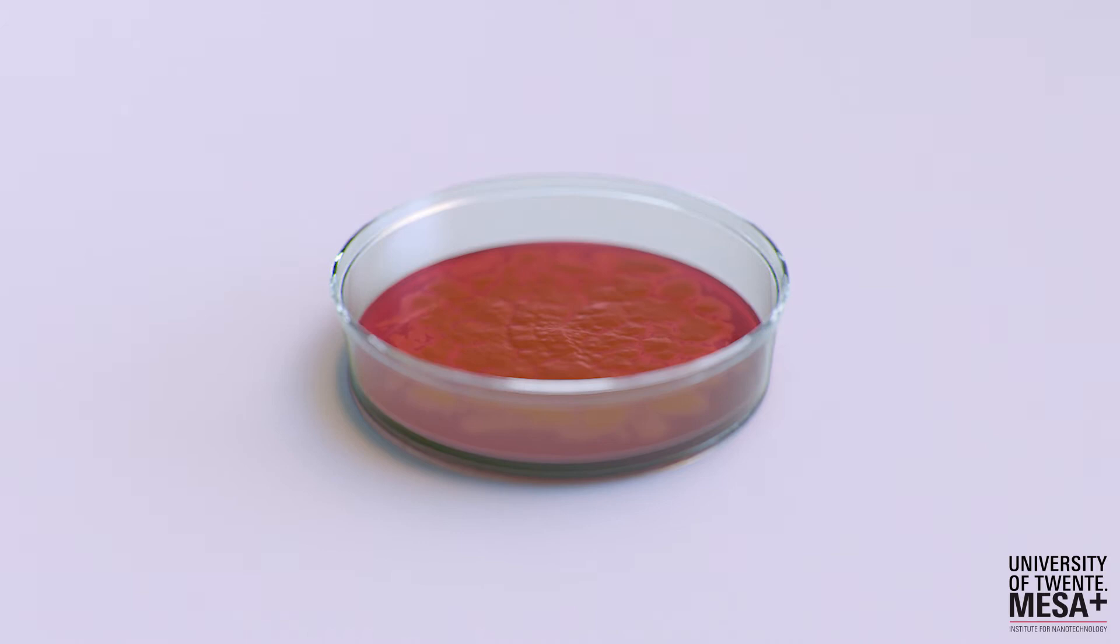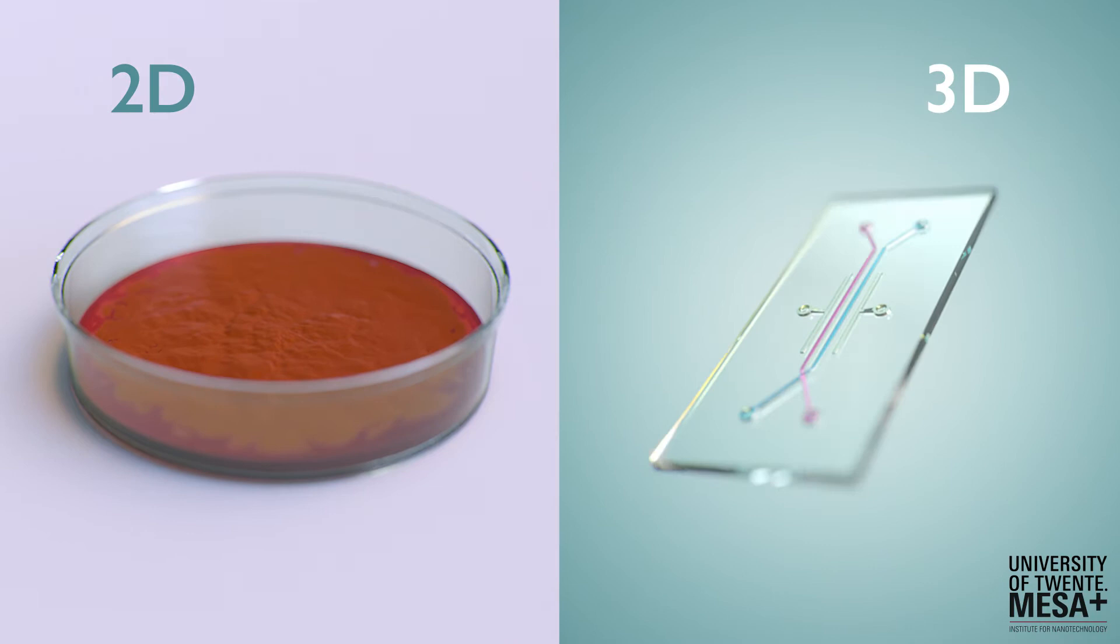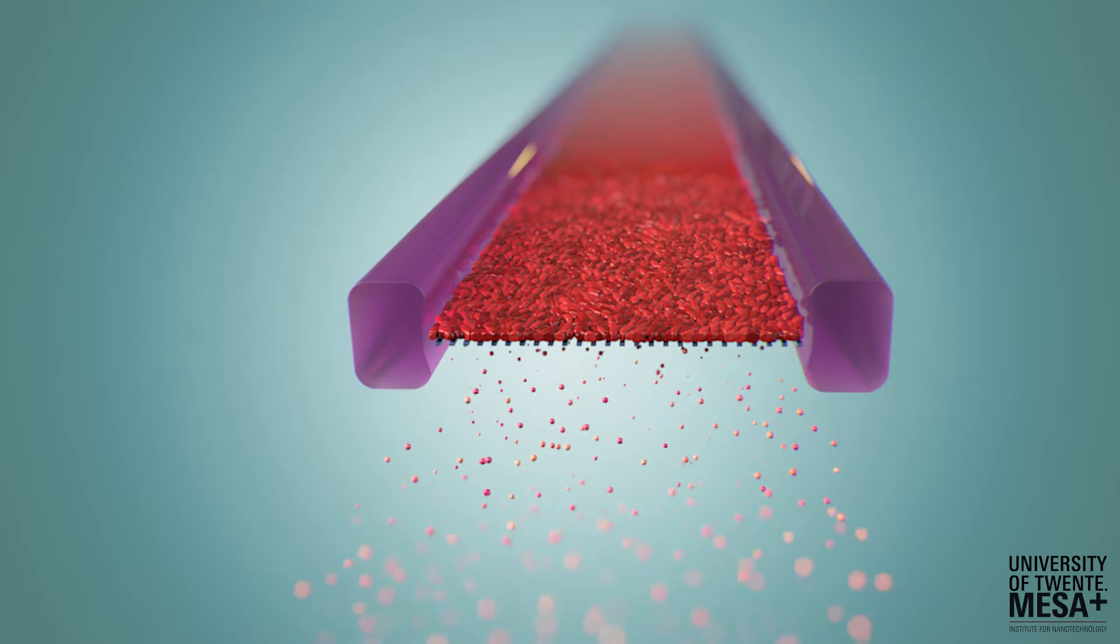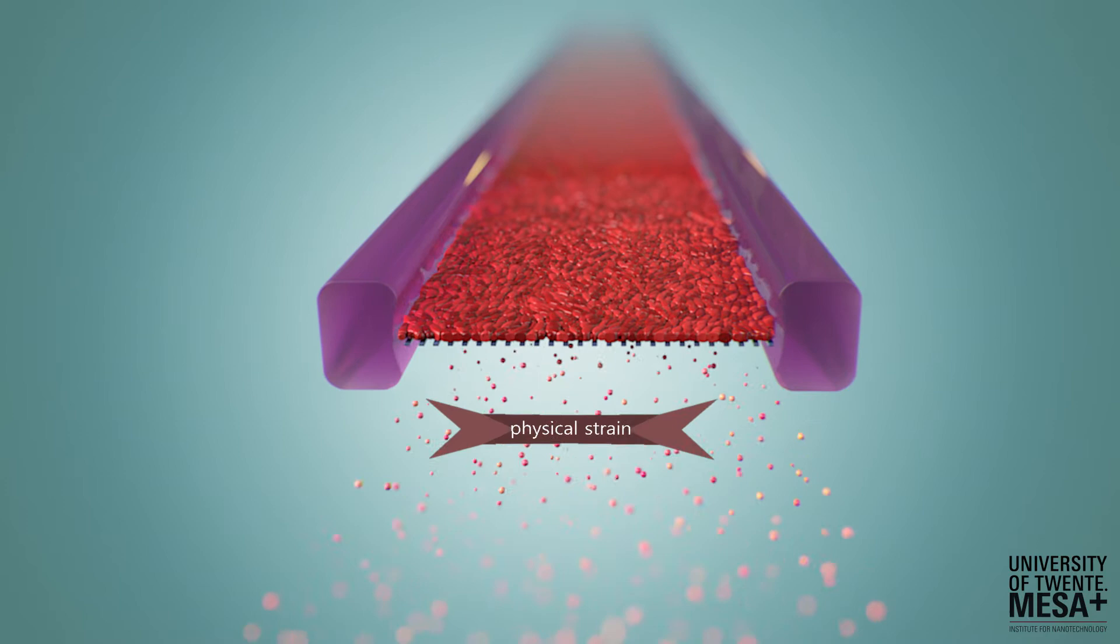Organ-on-chip devices mimic the native environment of the cells, including 3D topology or physical stretch and strain. For example, the heart muscle cells shown here are now experiencing the cyclic stretch as they would experience in our body during every heartbeat.